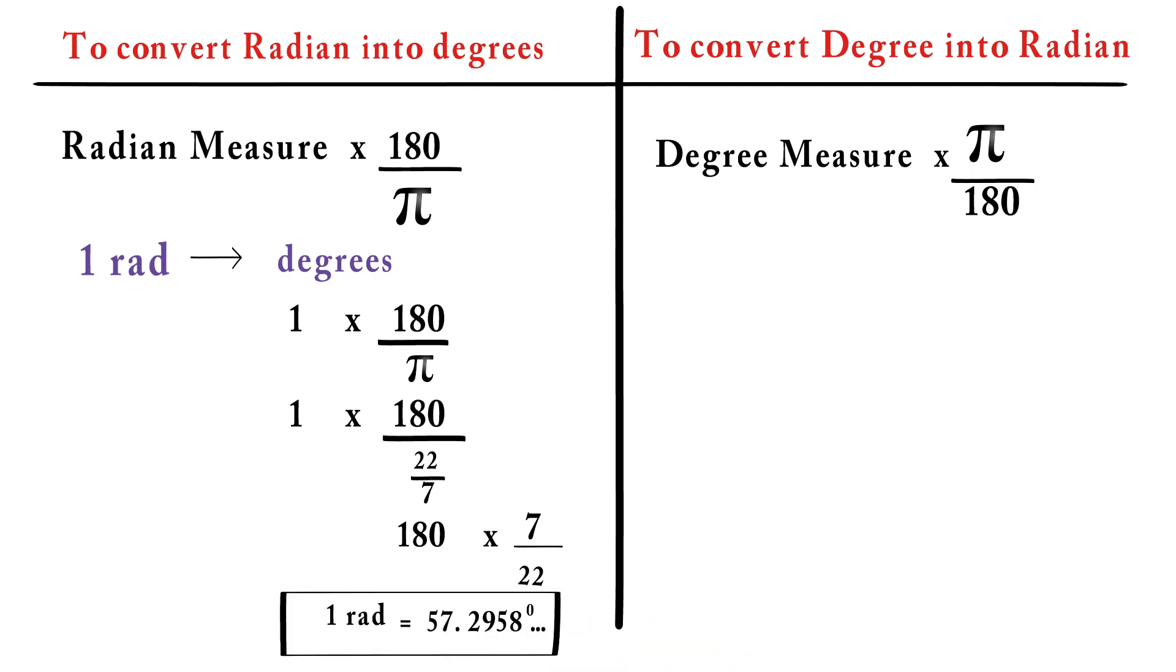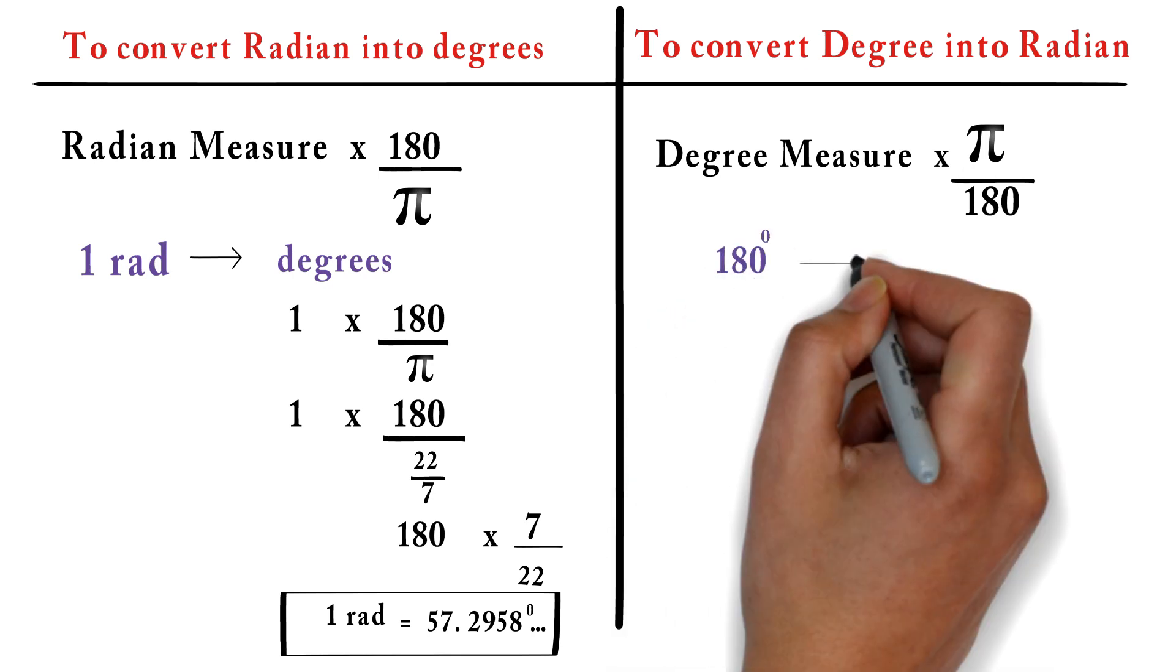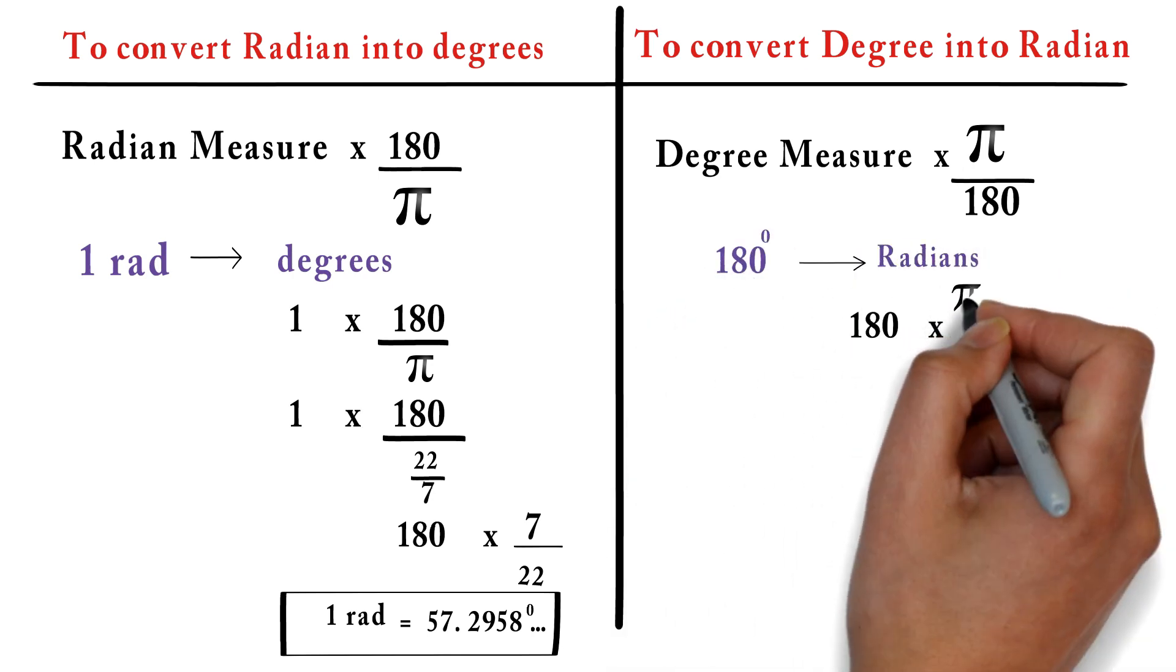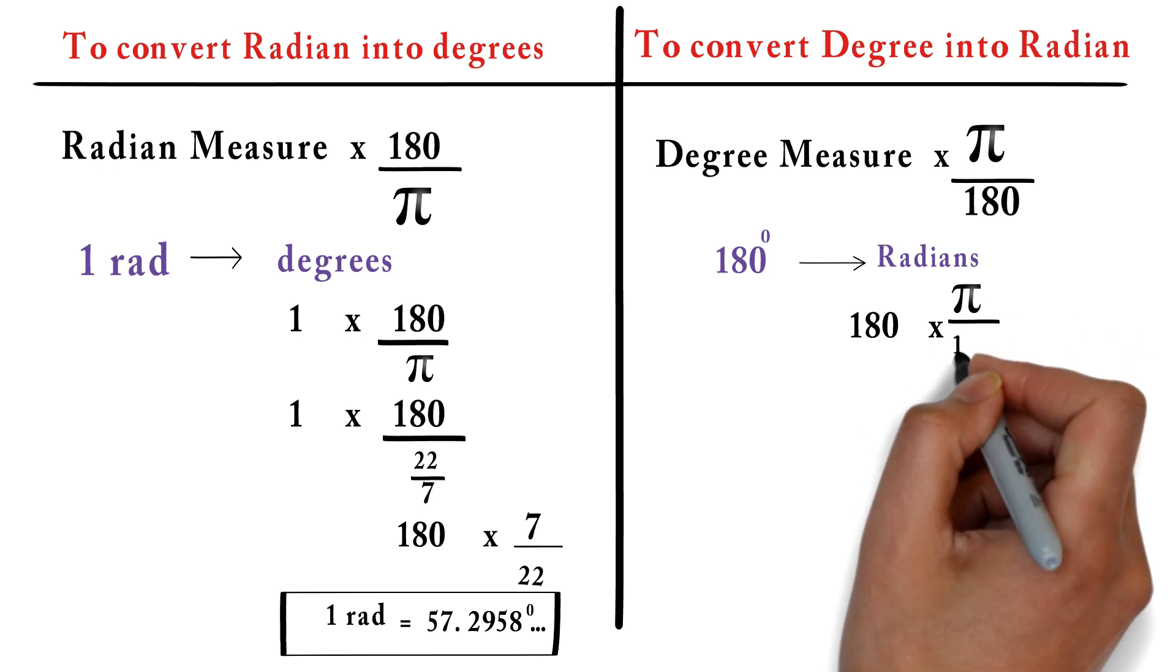Now, let's convert degree into radians. For example, let's convert 180 degree into radians. For that, multiply 180 degree by π/180.